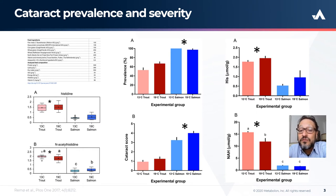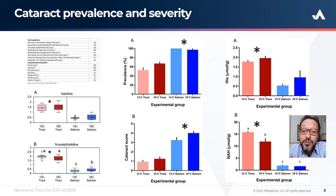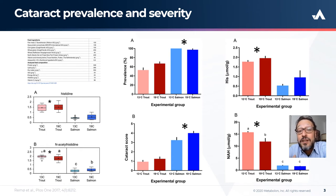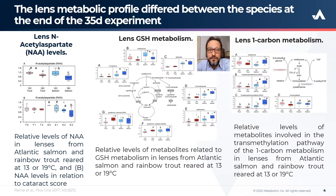N-acetylhistidine has been shown to function as an osmolite in the fish lens, contributing to maintaining water balance and volume regulation. The depleted levels of N-acetylhistidine in the salmon lens indicate that the salmon lens's ability to osmoregulate is lowered, while high concentrations in the rainbow trout suggest a stronger standing defense against shifts in osmolality and thus possibly a lower susceptibility to cataracts. It is truly staggering to see the lens metabolic profile differences between the two species at the end of the 35-day experiment, and most of all, the biological implications.